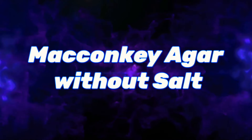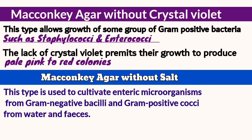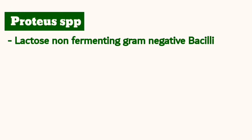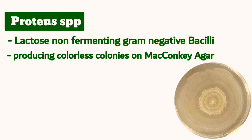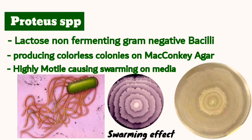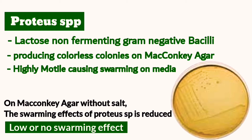MacConkey agar without crystal violet and without salt is another modification, which cultivates enteric microorganisms including gram-negative bacilli and gram-positive cocci from water and feces. It also lowers and limits the swarming effect of Proteus species. Proteus is a lactose non-fermenting gram-negative bacterium that produces colorless colonies and is highly motile due to flagella covering its entire body, which causes its well-known swarming effect. Without salt, this swarming effect is reduced.